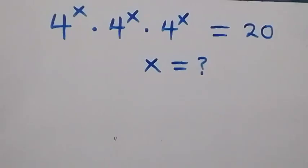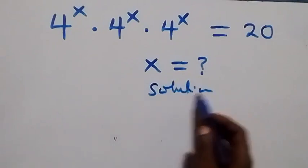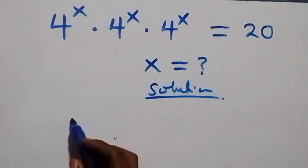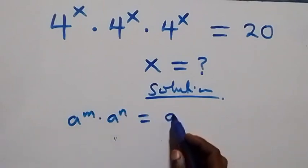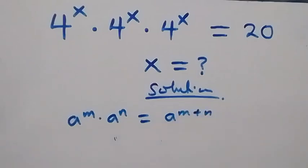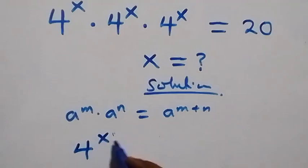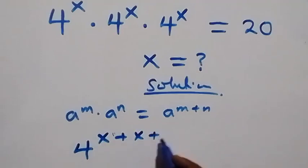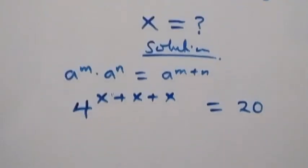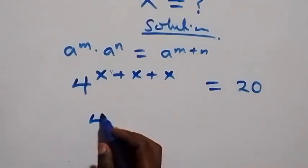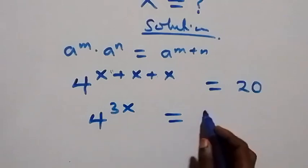Hello, you are welcome. How to solve this nice exponential equation. This follows from when we have e raised to power n times e raised to power n, which is e raised to power n plus n. Since we have seen this, then we have 4 raised to power x plus x plus x equals 20, which becomes 4 raised to power 3x equals 20.